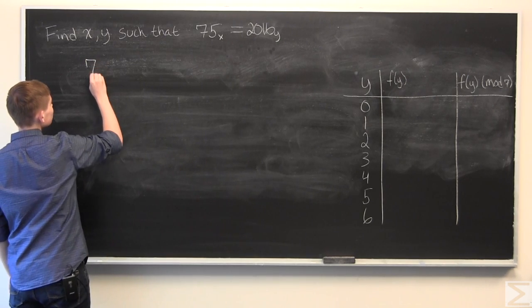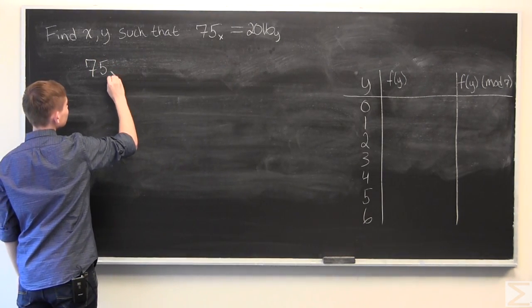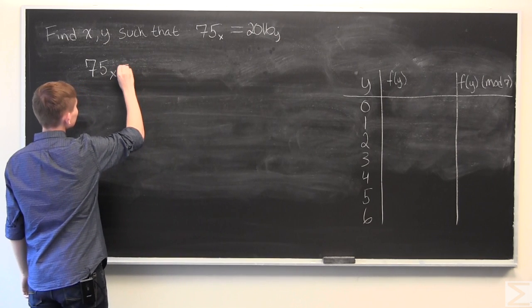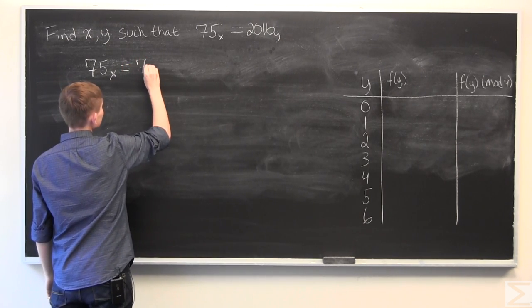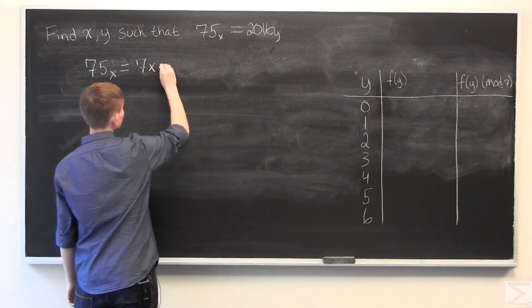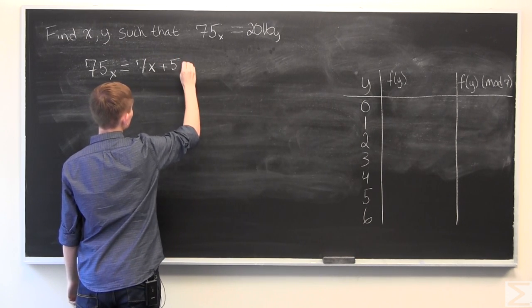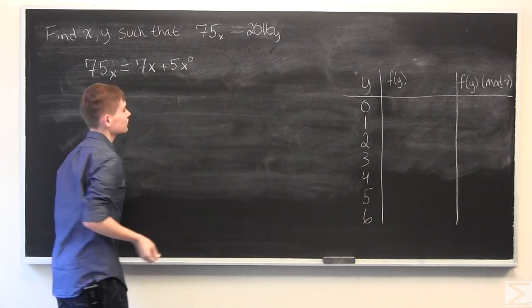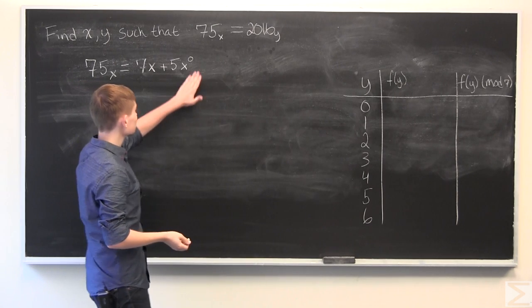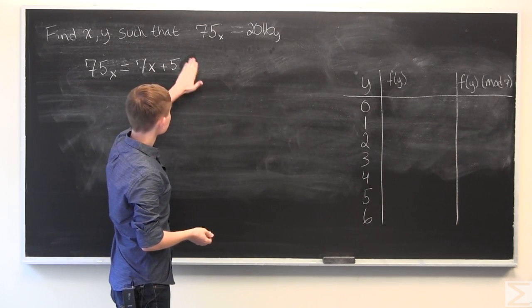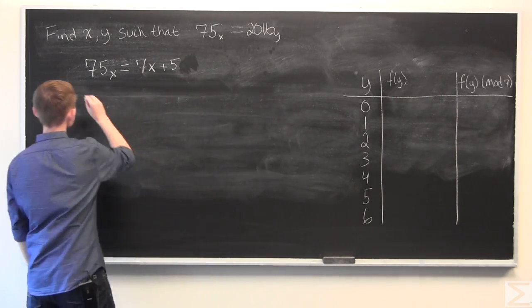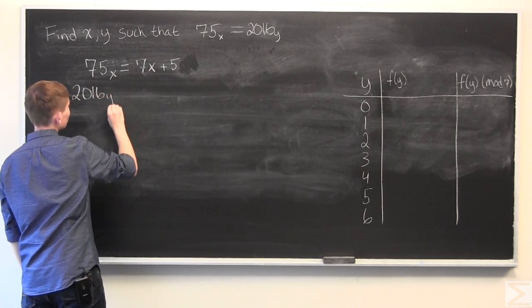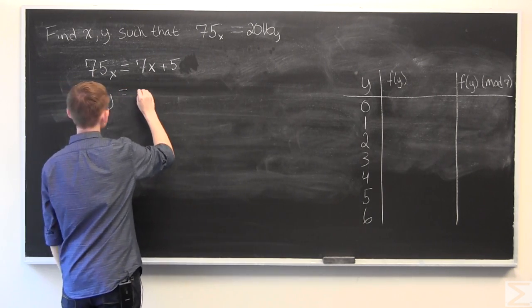So, 75 in base x is 7 times x plus 5 times x to the zeroth power which is just 1, so it's just plus 5. In 2016, base y is equal to